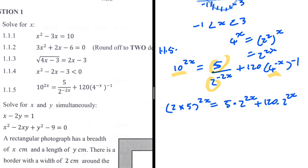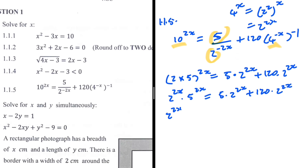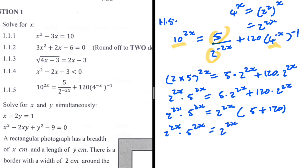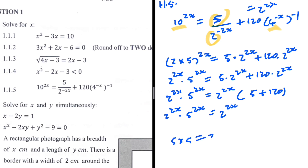Expanding the left side: (2 times 5) to the 2x becomes 2 to the 2x times 5 to the 2x. On the right hand side, multiplying through: 5 times 2 to the 2x plus 120 times 2 to the 2x. Factoring out 2 to the 2x on the right gives 2 to the 2x times (5 plus 120), and 5 plus 120 is 125, which equals 5 cubed.